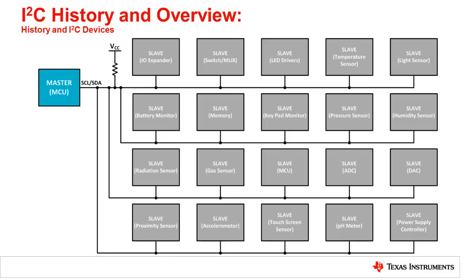Here are just a few types of devices that can be used: IO expanders, temp sensors, light sensors, memory, keypad scanners, pressure sensors, humidity sensors, ADCs, DACs, and a variety of other devices that use the I2C protocol.